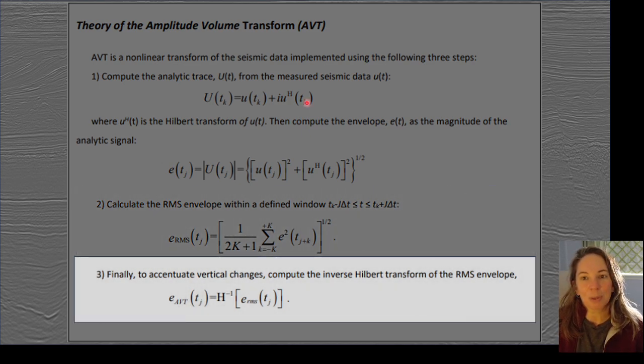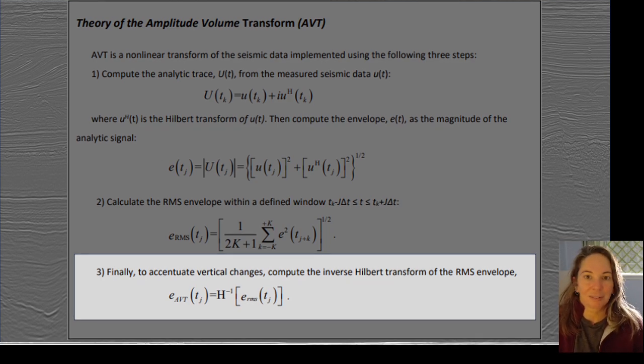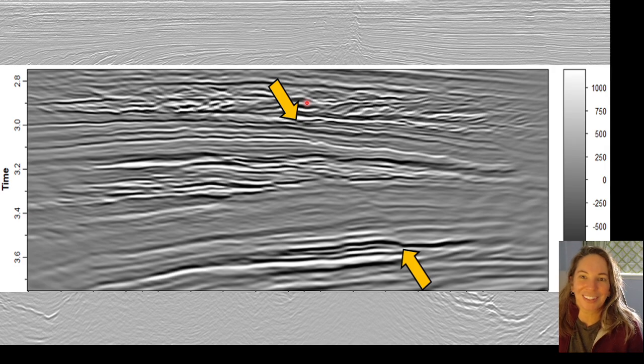And then the third step, we take the inverse Hilbert transform of our RMS envelope, which ends up highlighting those vertical changes in the data. Pretty straightforward, right?